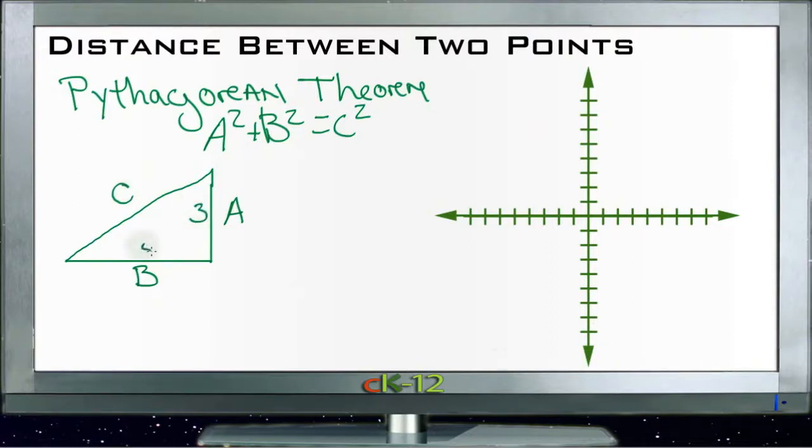If we know these two sides, we can find the third side just by squaring those two sides: 3 squared plus 4 squared equals c squared. Adding them together, we get 9 plus 16, that's 25 equals c squared.